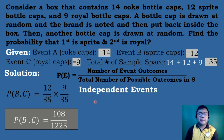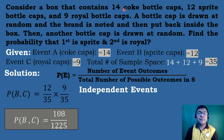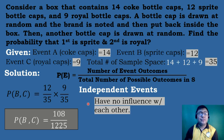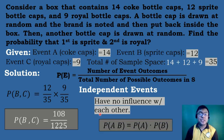This example is called independent events. When we say independent events, two events are independent if the occurrence of one of the events gives us no information about whether or not the other event will occur. Therefore, independent events are events which have no influence on each other. To solve for the probability of independent events, all we need to do is multiply the probability of the two events with each other.